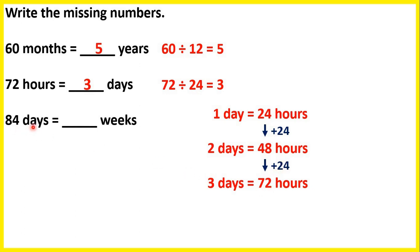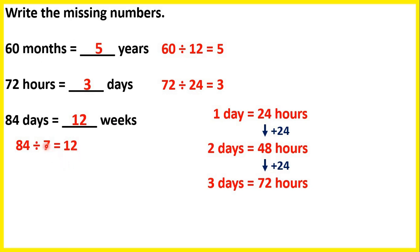84 days is the same as how many weeks? There are 7 days in one week, so we can divide 84 by 7, and that gives us 12, so our answer is 12 weeks. That makes sense because 12 times 7 gives us 84 days.